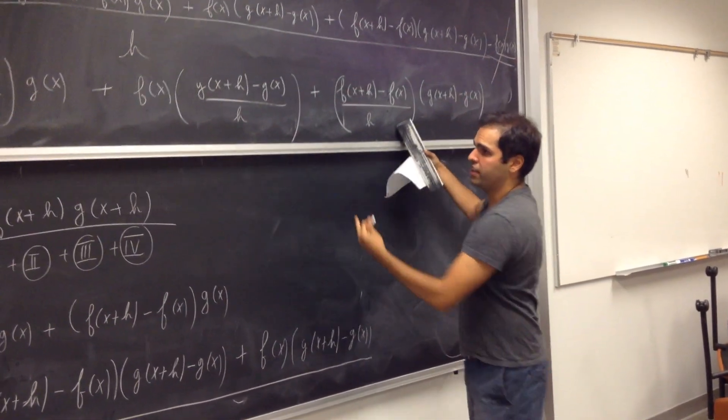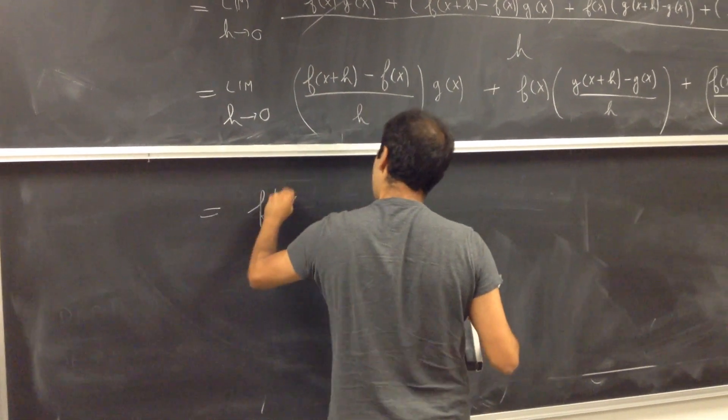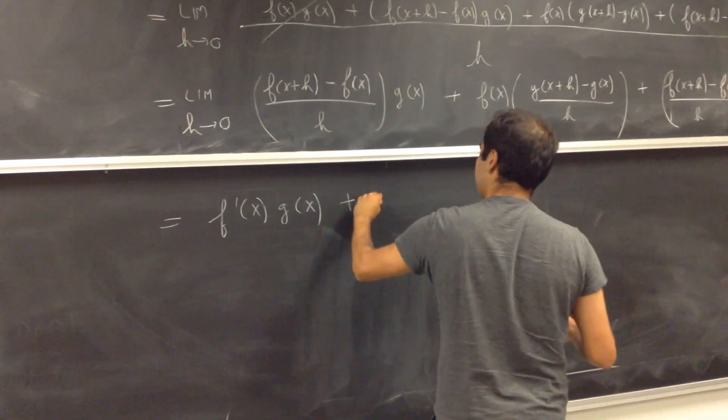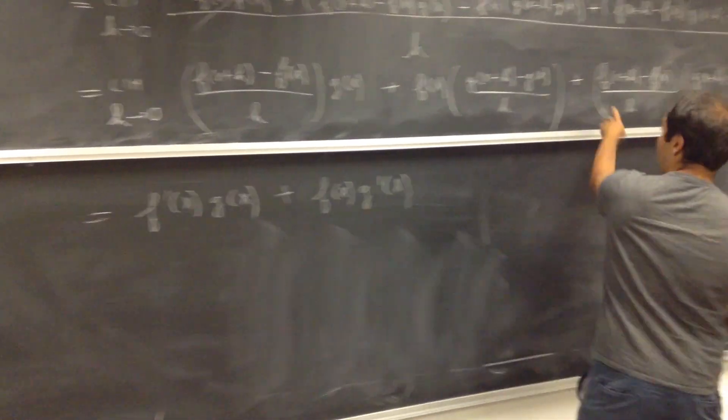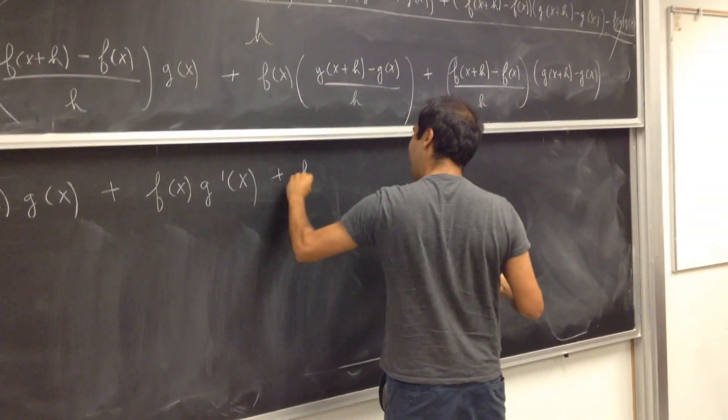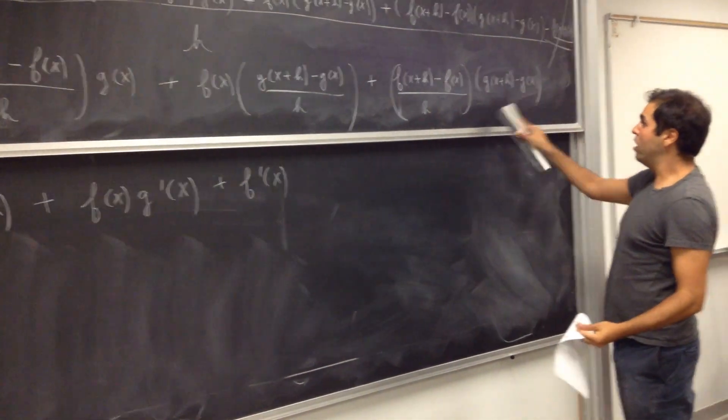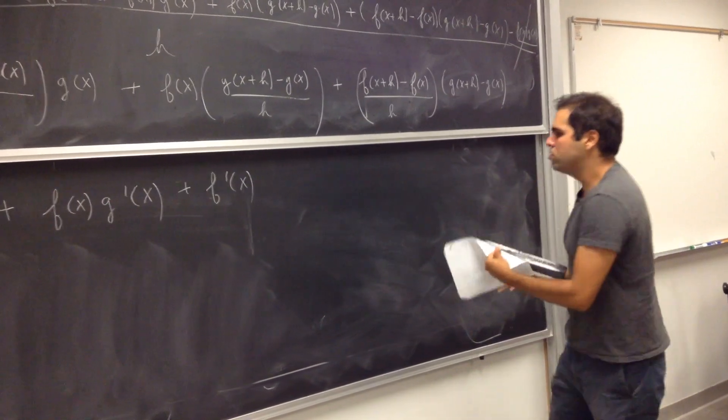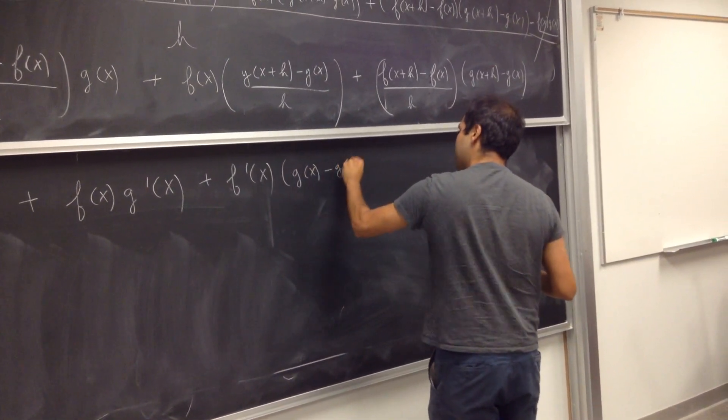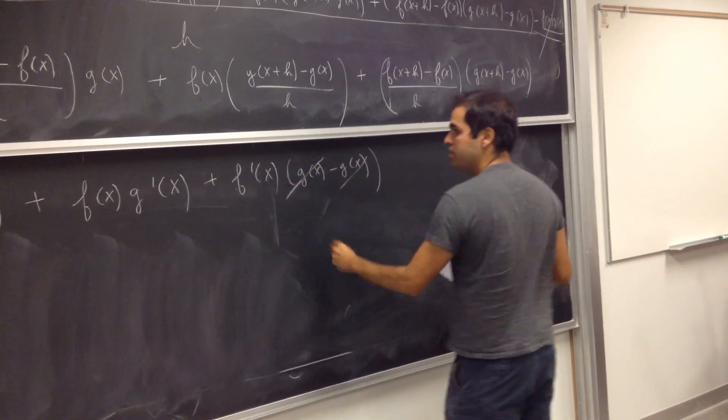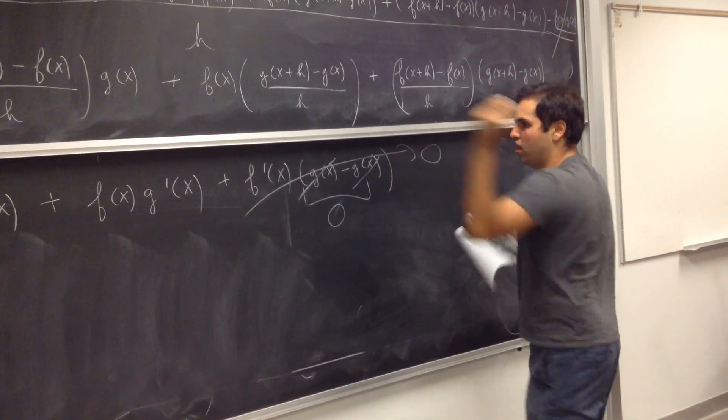Okay, so now let's write what this means. This is f prime of x times g of x plus f of x g prime of x. Well, this is f prime of x. But look, this term - because g is continuous - this actually goes to zero, because it's really just g of x minus g of x. And this cancels out, so this is zero, and therefore this whole junk just disappears.